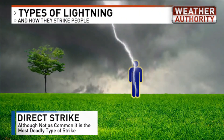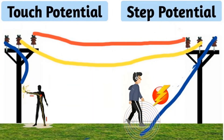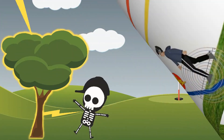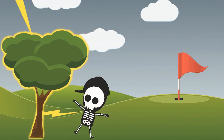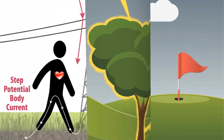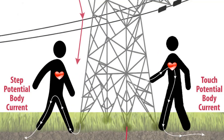This is a picture of a direct strike. Here you can see touch potential and step potential. This is a side flash. Here also you can see step potential body current and touch potential body current.